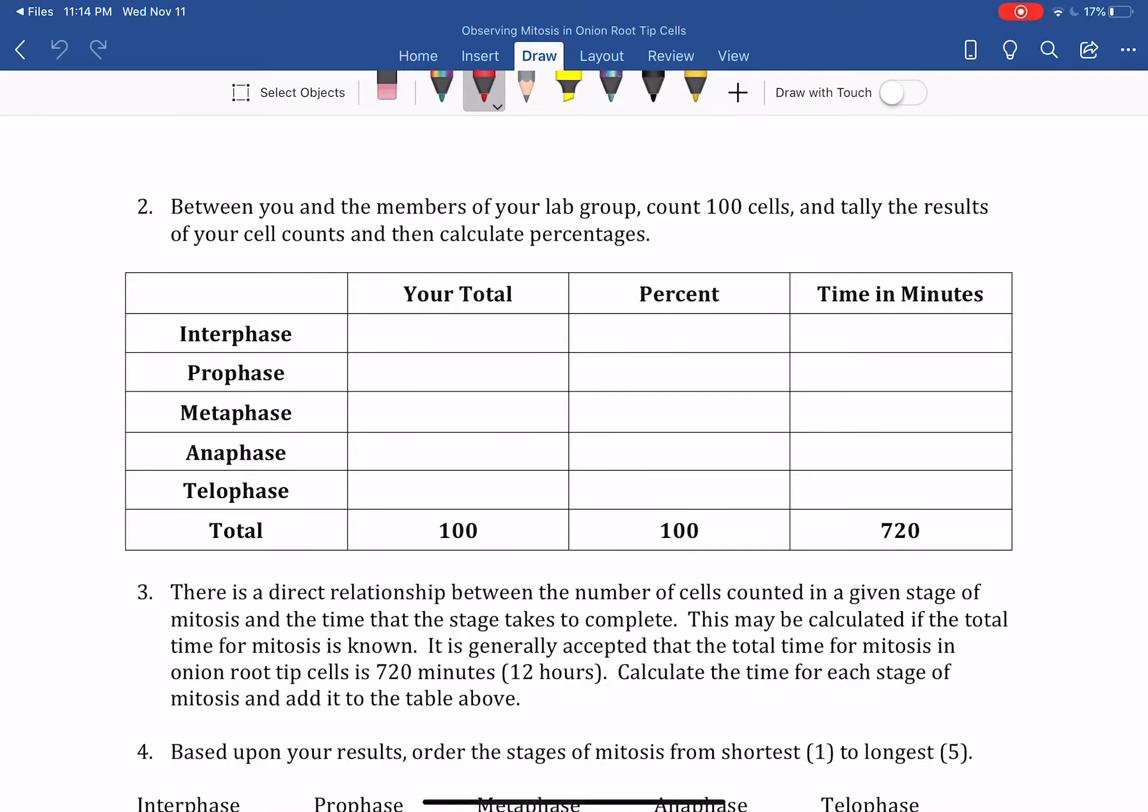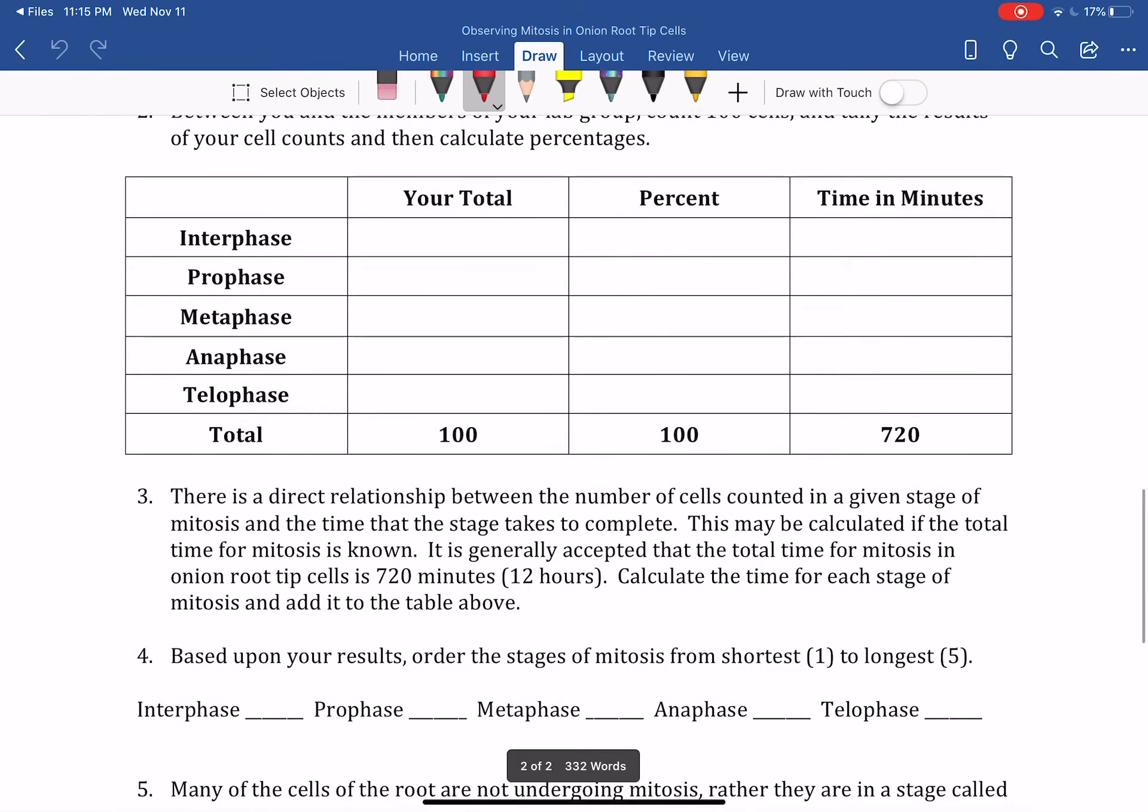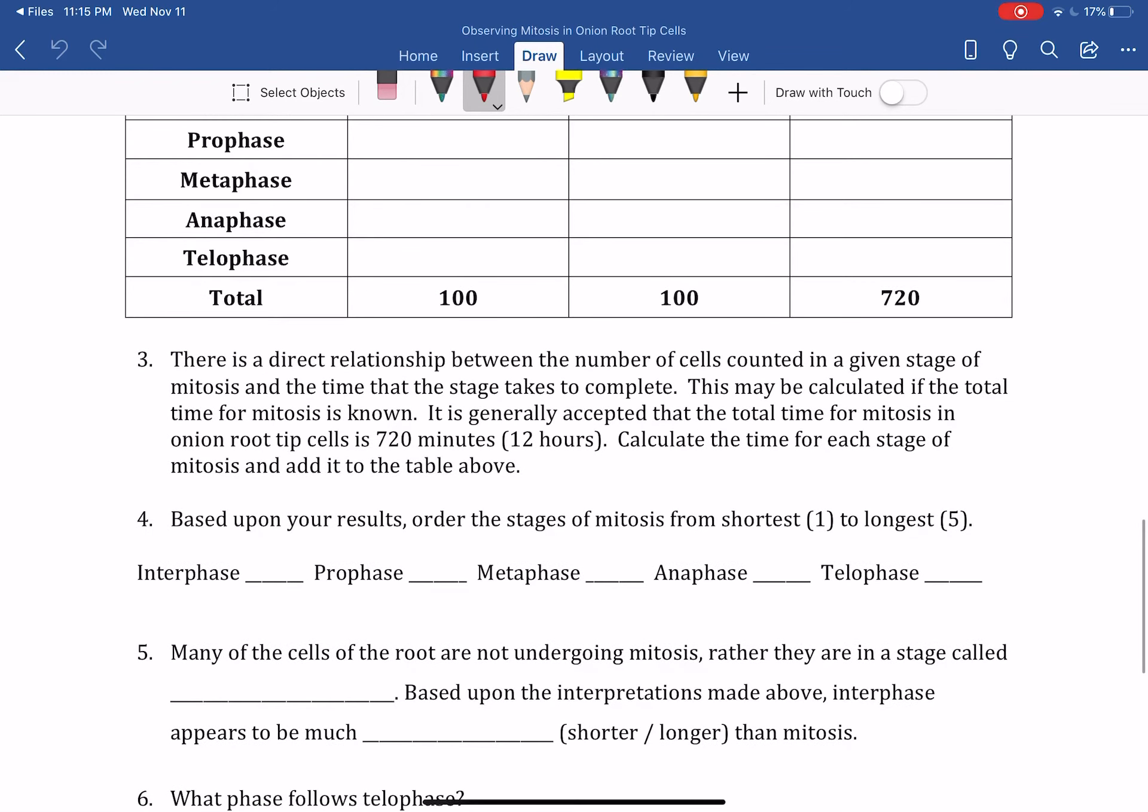And then the next part is, if you look at step three, it says generally the time for mitosis to occur is 720 minutes, which is 12 hours. It takes the cell 12 hours to divide. So you have to figure out basically your percentages and multiply that by 720 minutes. So it wants to know how much of the time is spent in interphase, prophase - how many minutes does it take the cell to go through interphase, to go through prophase, etc.